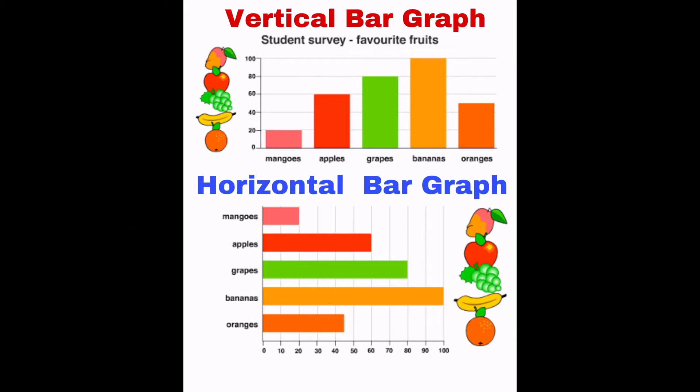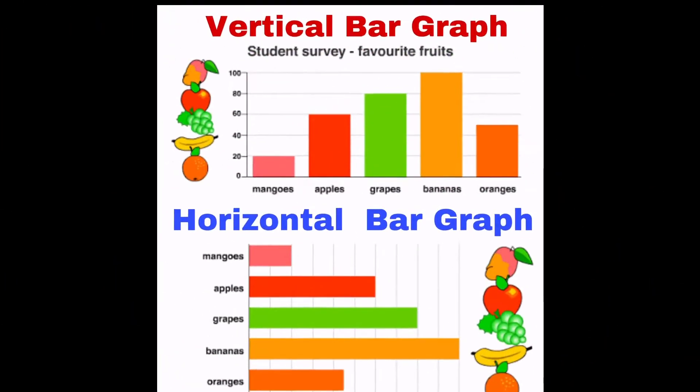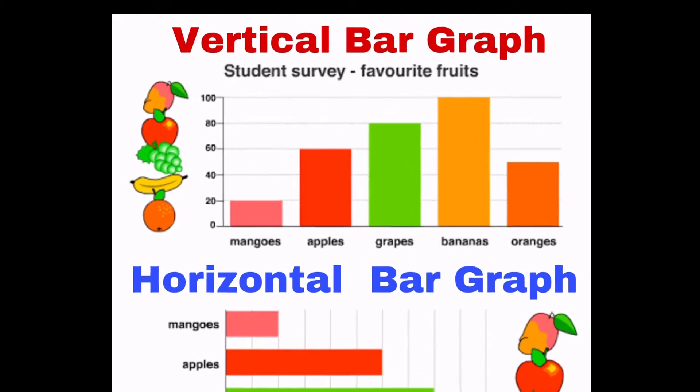These two graphs are not really different from each other. You see, both of them have the categories, groups, or labels. And both of them also have data for us to analyze and study. Now, what's different? Well, let's take a closer look.